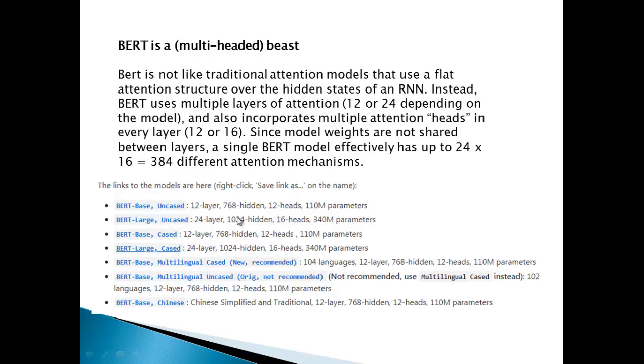In BERT base, they have used 12 hidden layers and 12 multi-head attention layers. In case of BERT large, they have used 24 hidden layers and 16 attention heads. These parameters are calculated based on all these numbers, and this is just a snapshot. You can find it on the Google released GitHub page itself. It is not like a traditional model like RNN but uses 12 or 24 layers.